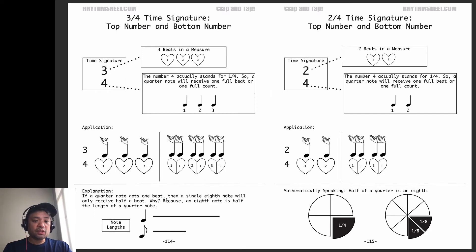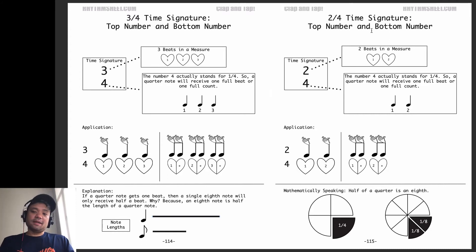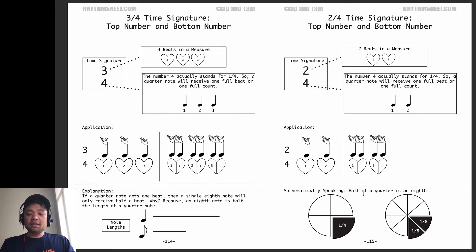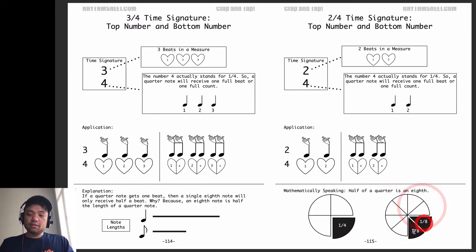Here's another way to look at it. If a quarter note gets one beat, then a single eighth note will only receive half a beat, because an eighth note is half the length of a quarter note. You can see — as far as note lengths are concerned — here's a quarter note, and an eighth note only gets half of that length. Same thing with 2/4 time signature: the top number gives 2 beats in a measure — 1, 2; next measure 1, 2 — so there's no 3 or 4. Eighth notes in 2/4: 1-and, 2-and. Mathematically, half of a quarter note is an eighth, because when you cut a quarter in half, you now have eight pieces in a whole.